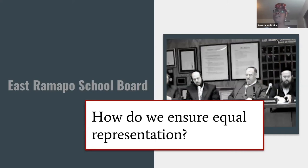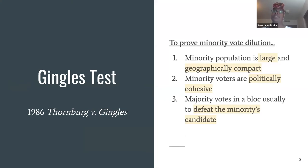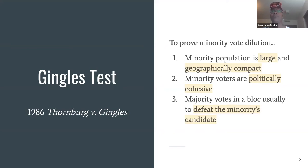In the case of East Ramapo and others like it, how do we ensure equal representation and make sure your vote counts as much as your neighbor's? Through using the Gingles test. This test came out of the 1986 Thornburg v. Gingles case and is how we prove that voting dilution exists. There are three criteria: first, the minority group is large and geographically compact enough to establish a majority in a single-member district; second, minority voters are politically cohesive; and third, the majority population votes to defeat the minority group's preferred candidate. If we can't prove criteria one, it will be much harder to assess points two and three.